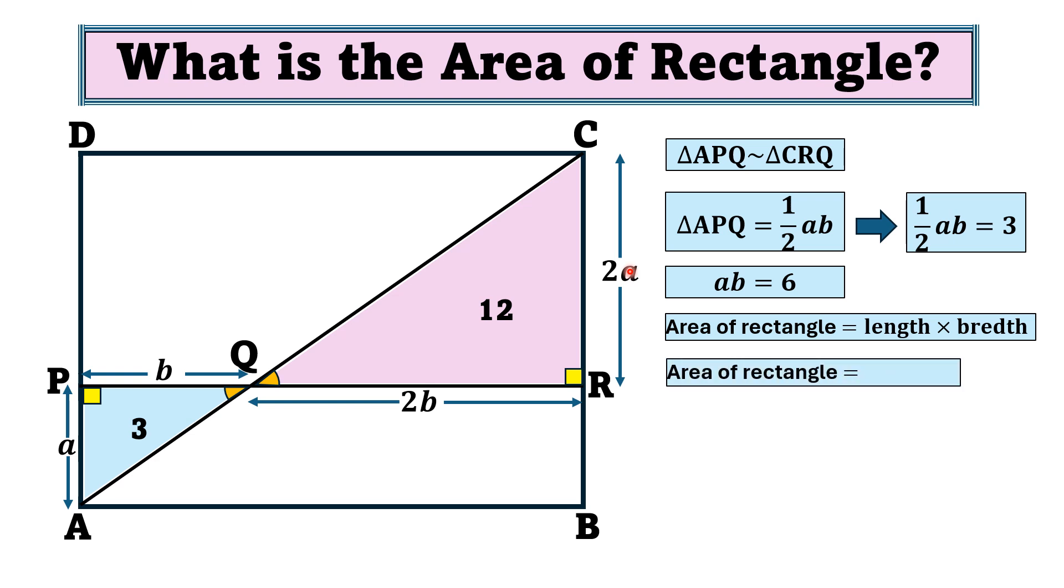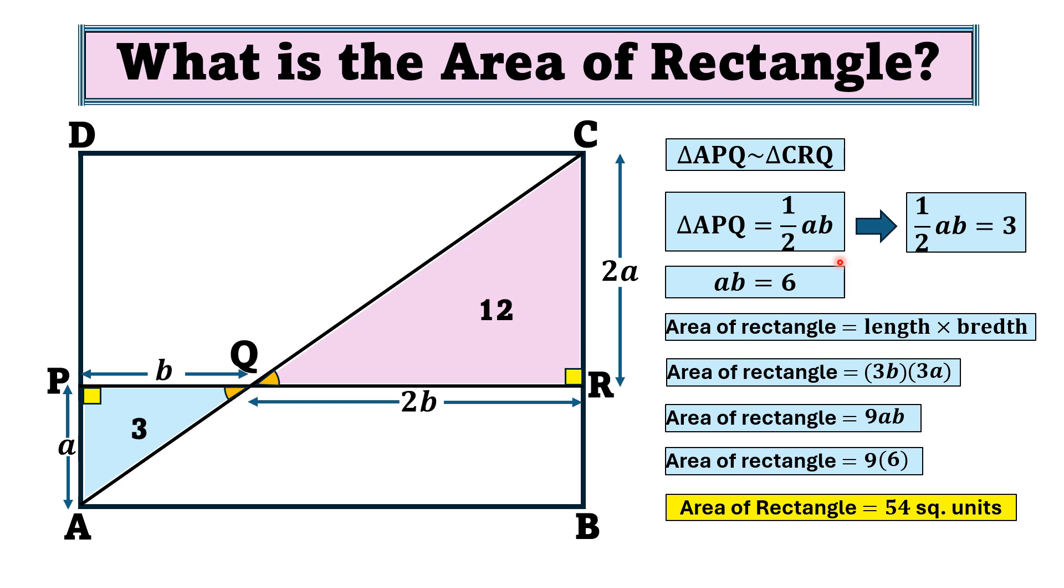If we substitute the value of length, that is 3b, and the value of breadth, that is 3a, thus the area of the rectangle must be 9ab. And we have the value of ab from earlier, which is 6. Then substituting here, the area of the rectangle will be 9 times 6, which is 54 square units. This is the answer. Thank you for watching.